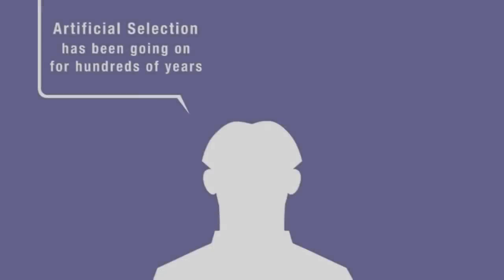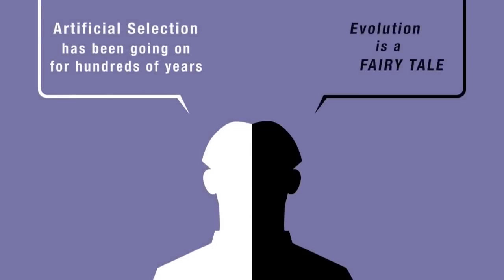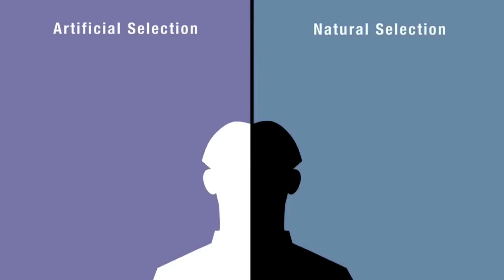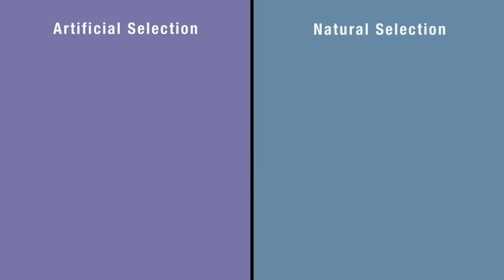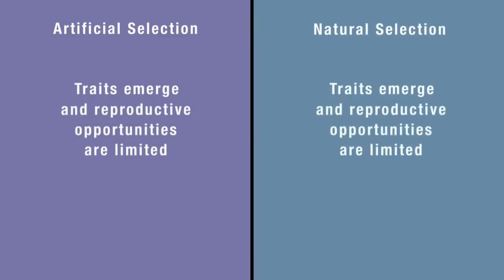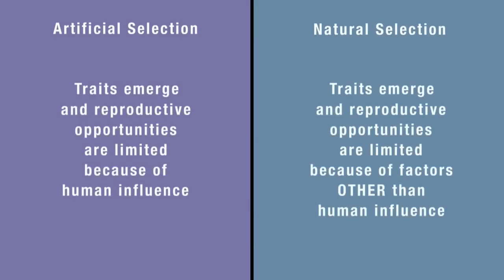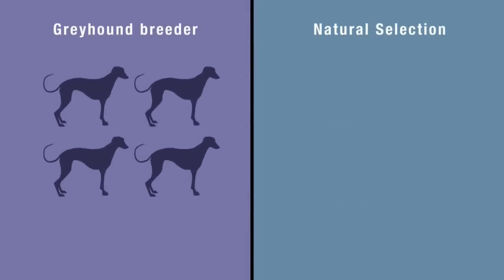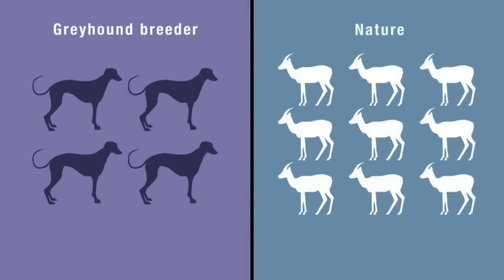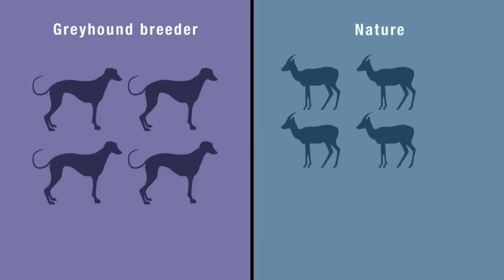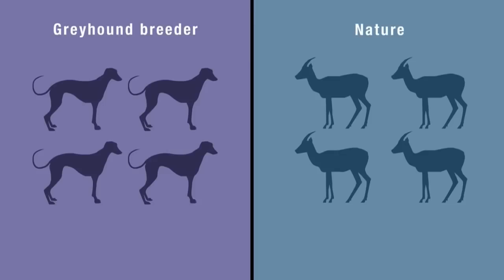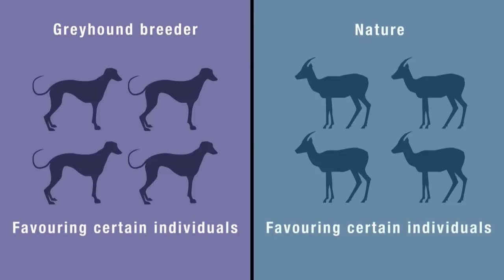Many who happily acknowledge artificial selection are the same people who label evolution impossible or a fairy tale. And yet natural selection, one of the major mechanisms that drives evolution, requires no magical suspension or violation of physical laws. It simply says that traits emerge and reproductive opportunities are limited because of factors other than human influence. If a greyhound breeder selects only the fastest dogs for breeding stock, and in the wild only the fastest gazelles outrun their predators and survive to reproduce, then both nature and the greyhound breeder are favouring certain individuals for reproducing offspring and passing on their genetic information to the next generation.